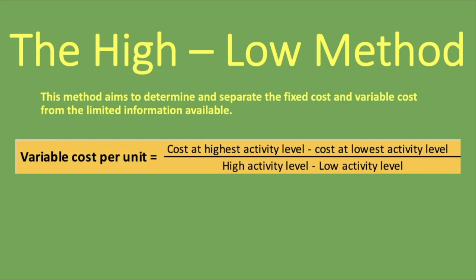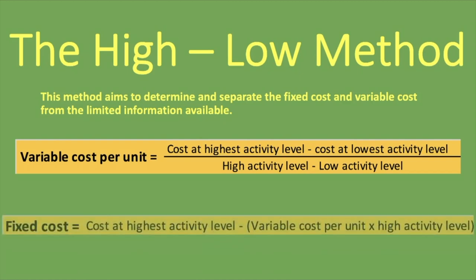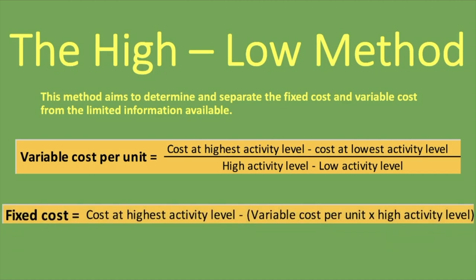How do you calculate the fixed cost using the high-low method? Here's the formula: you take the cost at the highest activity level, minus — in brackets — the variable cost per unit (which you calculate using the formula above) multiplied by the high activity level. So you take the cost at the highest activity level minus what the variable cost is going to be, which is the variable cost per unit times the high activity level.